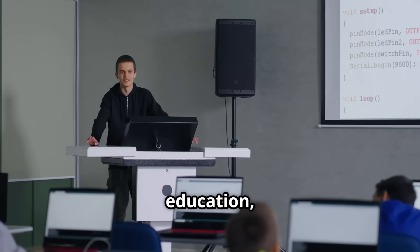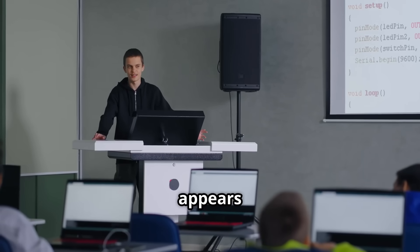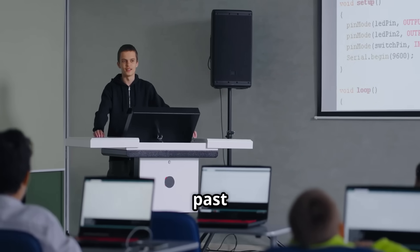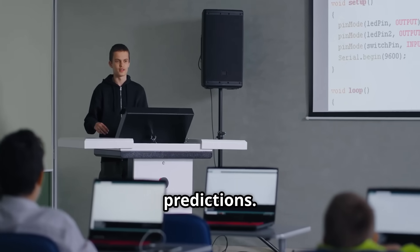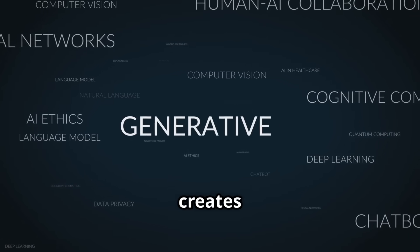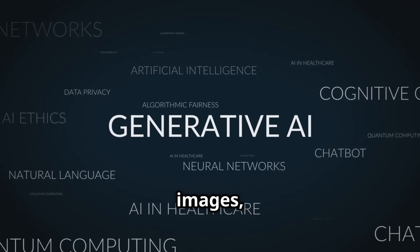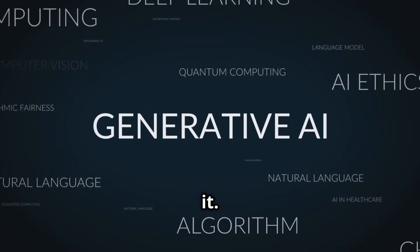In education, AI most often appears in two forms. Predictive AI uses past data to make recommendations or predictions. Generative AI creates new content, like text, images, or music based on what you ask it.